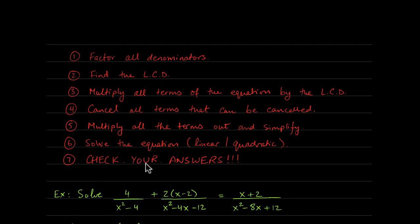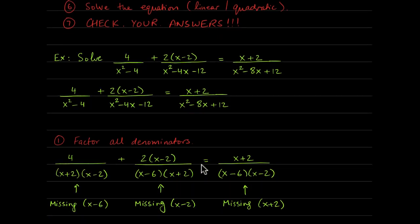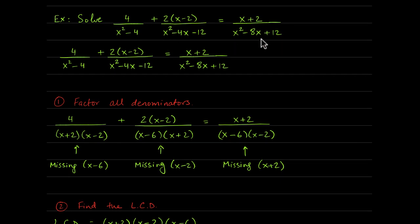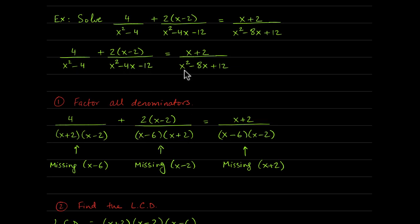Always check your answers — this is in big bold letters because this is where students lose marks. Here's a more complex equation. Factoring the denominators: x squared minus 4 is a difference of squares, giving x plus 2 times x minus 2. Then x squared minus 4x minus 12 factors by the AC method into x minus 6 times x plus 2. Finally, x squared minus 8x plus 12 factors into x minus 6 and x minus 2.